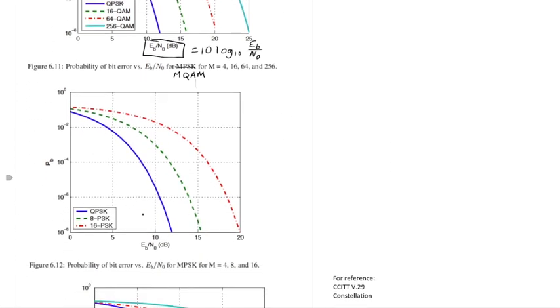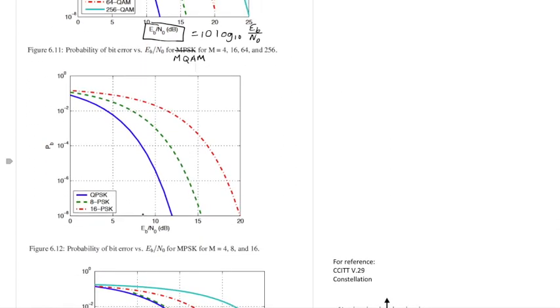So the next figure, though, is for M-PSK, and this is for 4, 8, and 16. Again, I can pick an Eb over N0 in dB, say 10 dB again, and I can look up and see what these probabilities of error are.